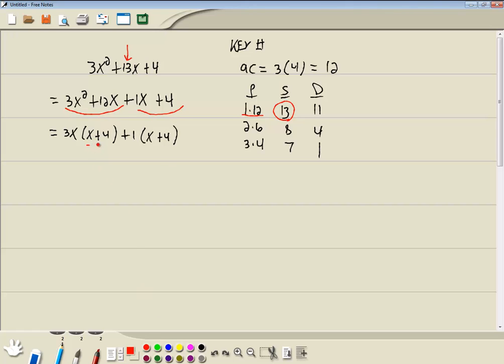Now remember, our goal with grouping is to get this parentheses the same as this, which they are. So I'll factor out (x + 4), and that leaves us (3x + 1).